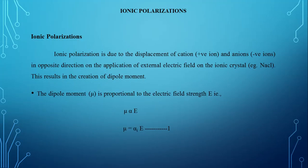Ionic polarization is due to the displacement of a cation, that is a positive ion, and an anion, that is a negative ion, in opposite directions on the application of an external electric field in an ionic crystal — for example, Sodium Chloride. This results in the creation of a dipole moment. The dipole moment is proportional to the applied electric field, and removing the proportionality, we put a constant called ionic polarizability. Take this as equation number 1.